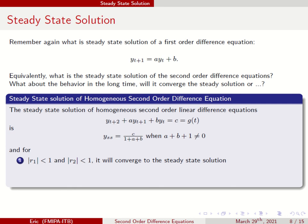If |r_1| < 1 and |r_2| < 1, the solution will converge to the steady state. If r_1 = r_2 = 1, it will converge to y_t itself. In other cases, the solution does not converge to the steady state solution or even to y_t.